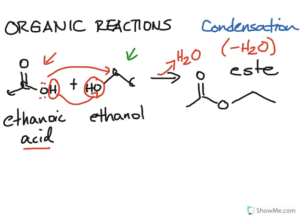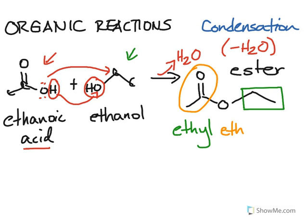Now the name of an ester always ends in 'oate' with an O and an ATE. Let me box different components right here. This right here is from the ethanol and that's what we name first. This is the ethyl part of the name. With a different color I'm going to circle this part right here, and note that was from the ethanoic acid, so it still has that ethano but then we put an ATE.